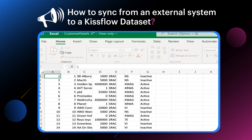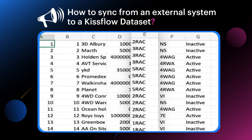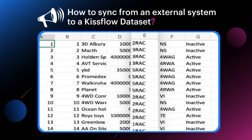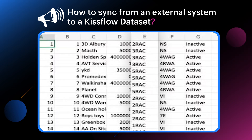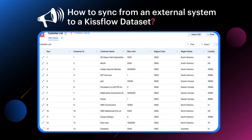We can also perform a condition-based action within Kislo during the sync process. For example, here we can consider column E as a region code, and if your external system doesn't have any region names for the region codes, but that might be helpful for you to have the region names within Kislo to use them in your process. During the sync process, we can validate the region codes and map the region names accordingly, and the data will be populated in Kislo as such.